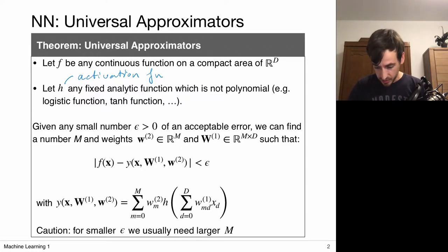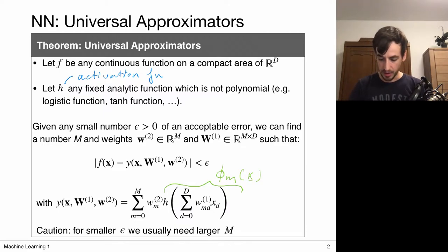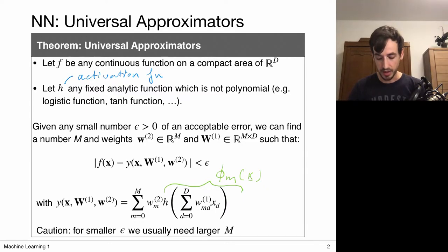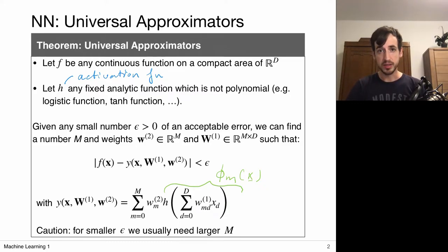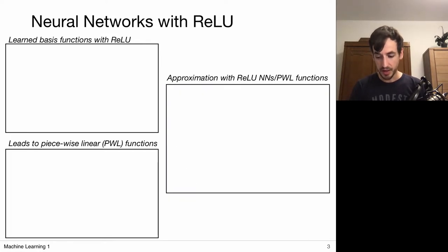Switching to the basis function viewpoint: my two-layer neural network learns basis functions phi_m of the input x, constructing complex feature vectors which are then used in a linear model. This two-layer neural network can then be arbitrarily close to the function I want to approximate. To gain some intuition I'm going to start with ReLU-based neural networks, since the theorem says I can choose any non-polynomial activation function.